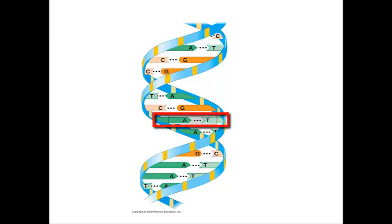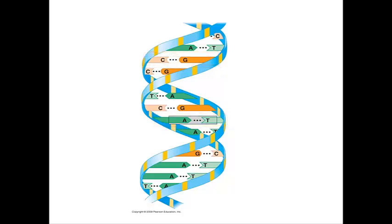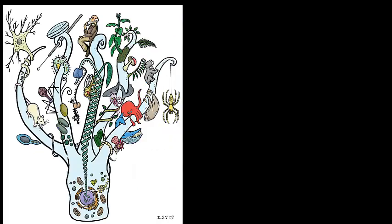And C is always paired to G — cytosine to guanine. These are referred to as base pairs, and their order along the DNA leads to a particular sequence of nucleotides.